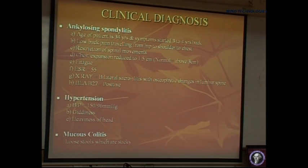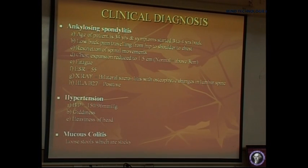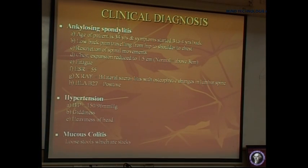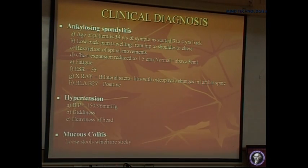This is a very significantly reduced spondyloarthropathy function. ESR is moderately raised. Usually in ankylosing spondylitis, you do not get a very high ESR like in lupus or RA, except in cases of reactive arthritis. In ankylosing spondylitis, the ESR is moderately raised and does not necessarily correlate with disease activity.